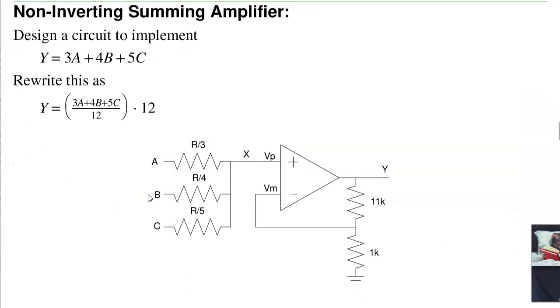I can build a non-inverting summing amplifier. If I take a weighted average, this is going to give me X is the weighted average of A, B, and C. That's going to be 3A plus 4B plus 5C over 12.